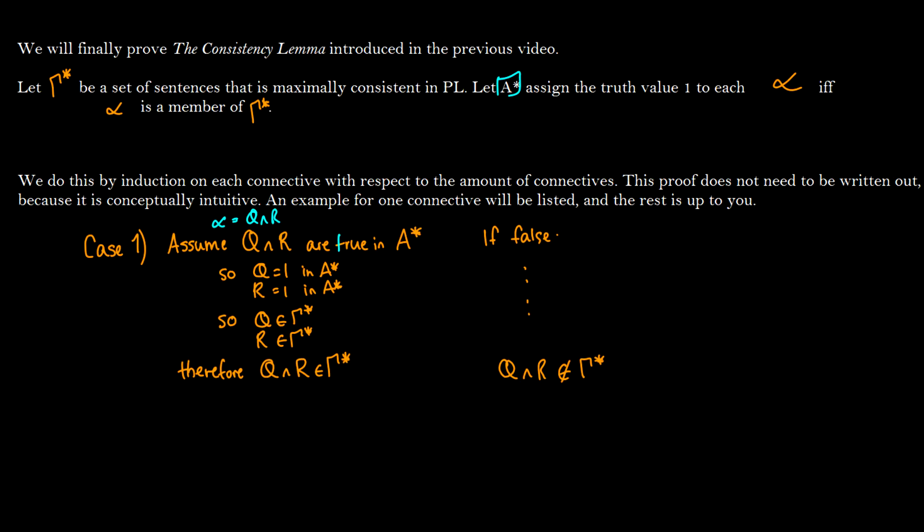And then you have to prove the false side too. So really you're just extending the truth in a to being a member of gamma. And you do this for all four cases and then you can claim